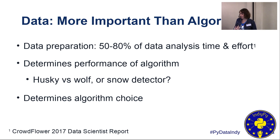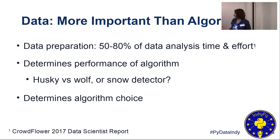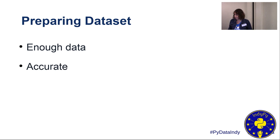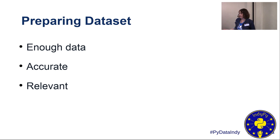Do you need to classify into categories like dog, cat, or wolf? Or do you need something that assigns a value, like temperature, money, or time? Or maybe you don't have any labels at all and you just want to see what's in your data — how can I sort things that are similar? When preparing your dataset, keep in mind: having enough data, it has to be accurate, and it needs to be relevant. You need to make sure you're giving the algorithm useful information for the problem you're trying to solve. If you want to identify a cat versus a dog, pictures of houses in your dataset probably aren't helpful.